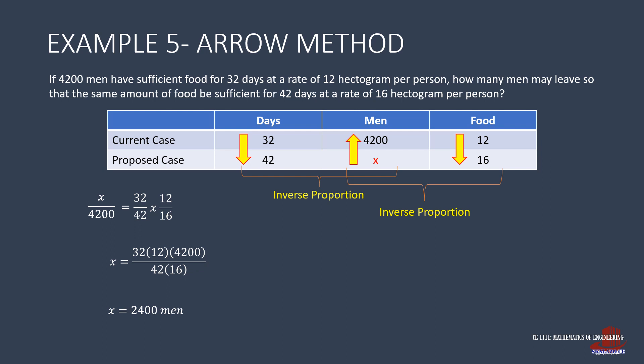Giving X as 2,400 men. The question asks for how many people should leave to meet the condition of the proposed case. Thus is solved as 4,200 minus 2,400, so there are 1,800 men who are to leave.